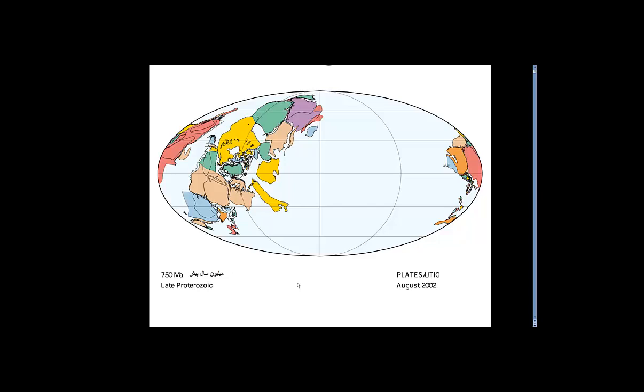This goes back to 750 million years ago. This is one theory of how the land masses were located, and we're going to follow them through history. The colors basically mean where the lands end up.